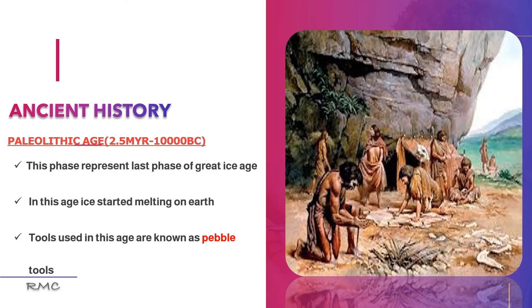After the syllabus discussion, I am going to start the Stone Age. The first one is the Paleolithic period — 'lithic' means stone. The time period of the Paleolithic is from about 2.5 million years ago up to 10,000–20,000 years ago — a very large time period. That is the Old Stone Age; 'paleo' means old. This phase represents the last phase of the great Ice Age.